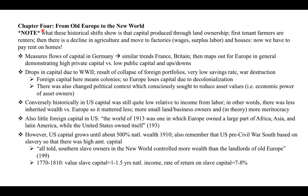In chapter four, from old Europe to the new world, he shows that capital was originally produced through land ownership — the first renters were tenant farmers. Then historically there's a decline in agriculture and a move to factories based on paying wages and getting profits from surplus labor. Now most of us pay rent on our homes, so we're still in a similar situation — people who own the land and assets are making money off the people who work and who have to pay rent.